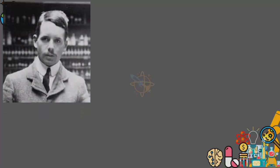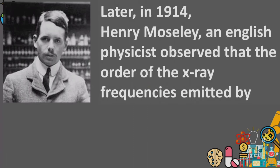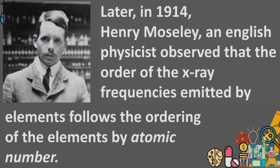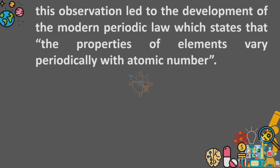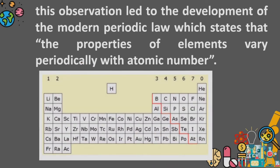Later, in 1914, Henry Moseley, an English physicist, observed that the order of the X-ray frequencies emitted by elements follows the ordering of the elements by atomic number. This observation led to the development of the modern periodic law.